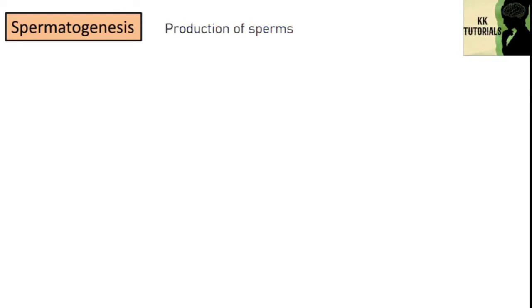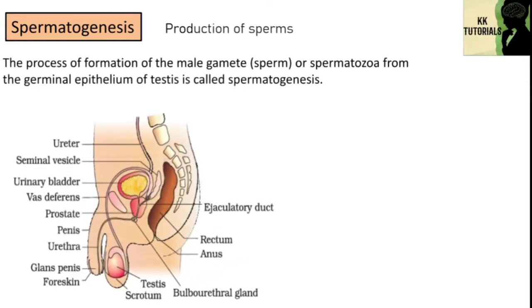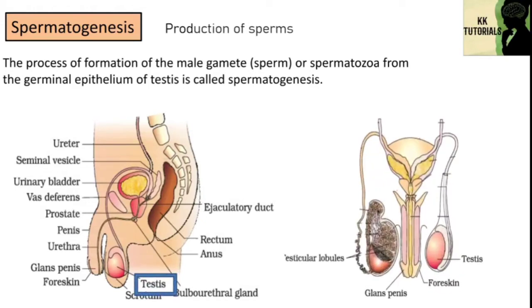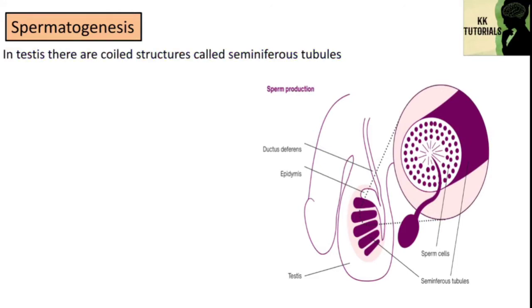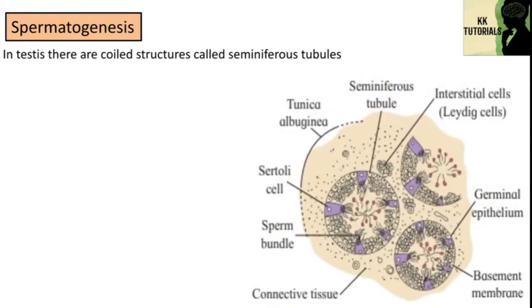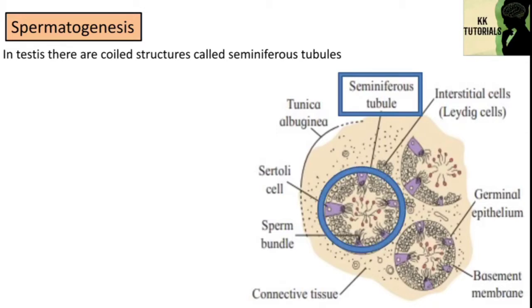Let's talk about spermatogenesis. The production of sperms is called spermatogenesis. This process takes place in the testis. See the location of testis — this is the structure where sperms are produced. In the transverse section of testis, there are coiled structures called seminiferous tubules, and within these tubules, sperms are produced.